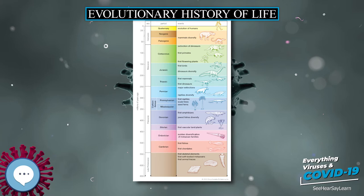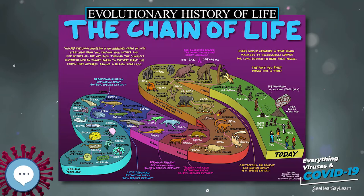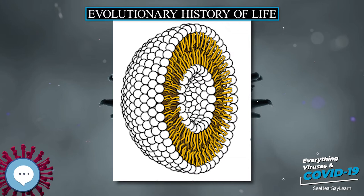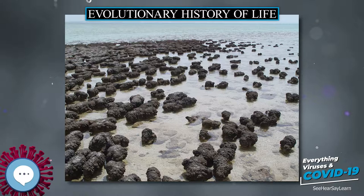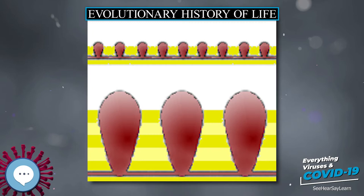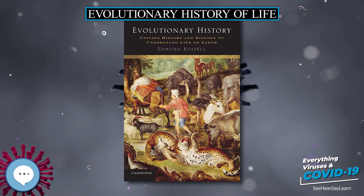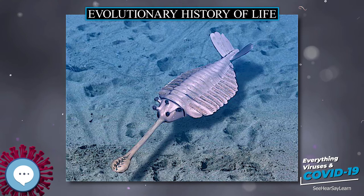Ediacara biota appeared during the Ediacaran period, while vertebrates, along with most other modern phyla, originated about 525 Ma during the Cambrian explosion. During the Permian period, synapsids, including the ancestors of mammals, dominated the land, but most of this group became extinct in the Permian-Triassic extinction event 252 Ma. During the recovery from this catastrophe, archosaurs became the most abundant land vertebrates; one archosaur group, the dinosaurs, dominated the Jurassic and Cretaceous periods. After the Cretaceous-Paleogene extinction event 66 Ma killed off the non-avian dinosaurs, mammals increased rapidly in size and diversity. Such mass extinctions may have accelerated evolution by providing opportunities for new groups of organisms to diversify.